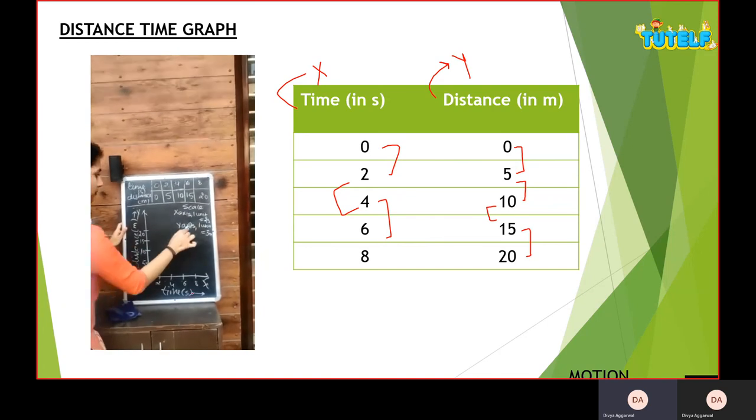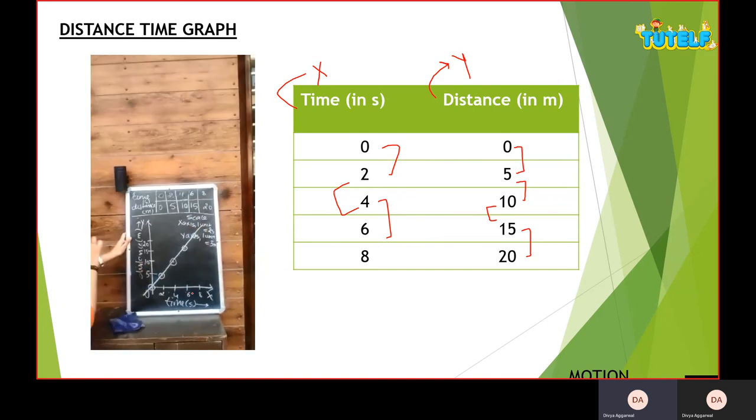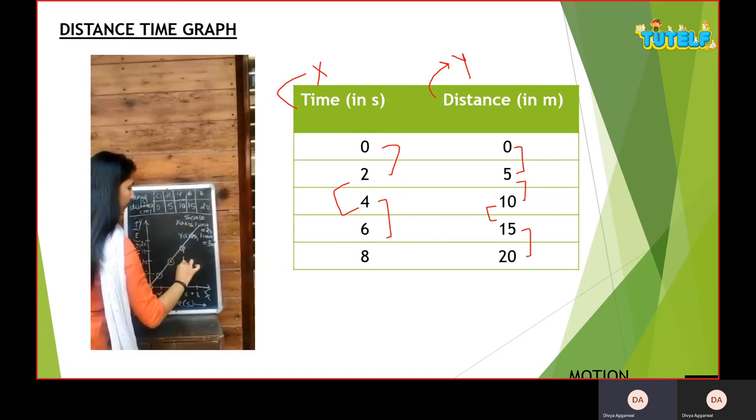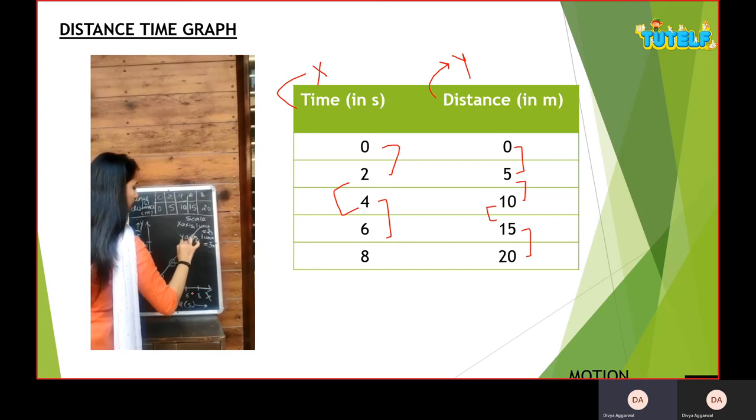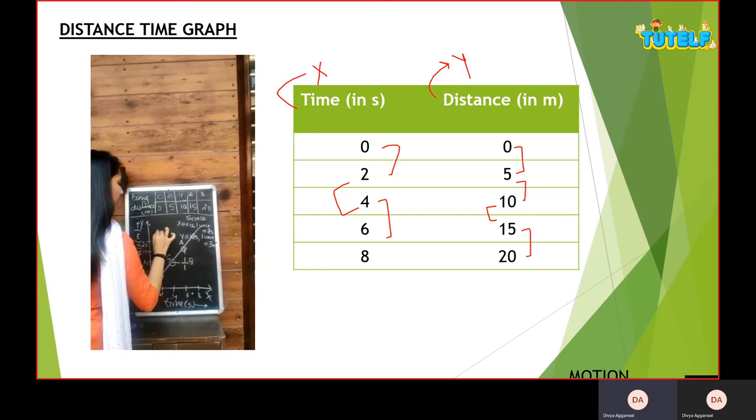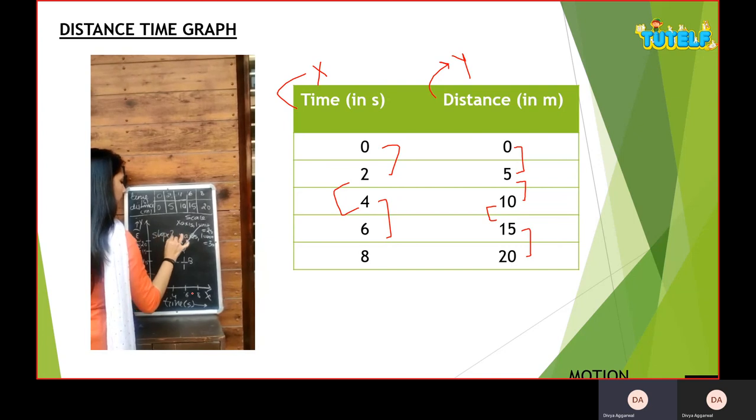After doing this, we will join in a straight line. And after joining, we will start the slope. So we will draw two perpendiculars and we will name the triangle ABC. Now we will see how the slope is.